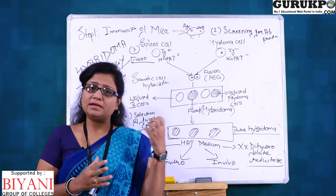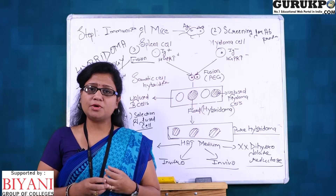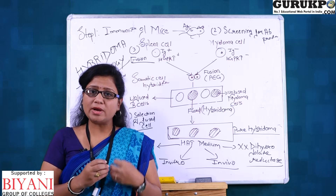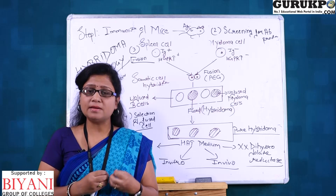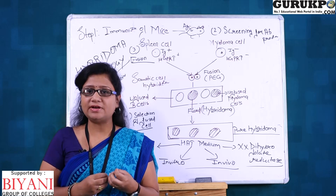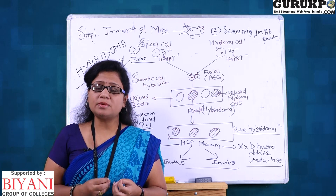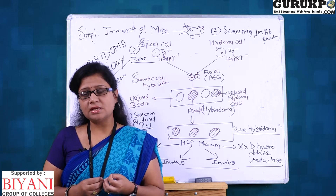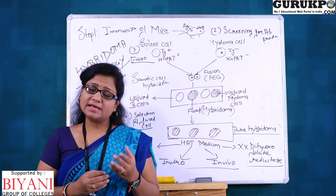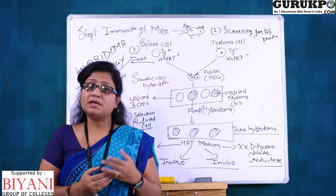Monoclonal antibody — the technique used is hybridoma technology, which was invented by Kohler and Milstein in 1975, and they got the Nobel Prize for this invention.